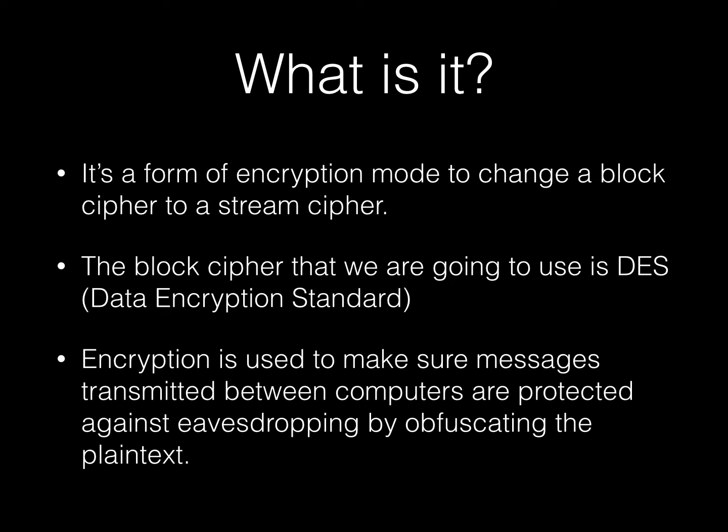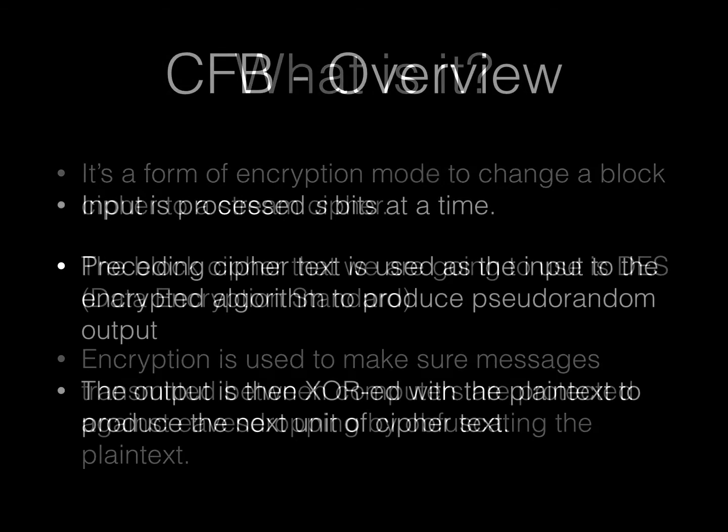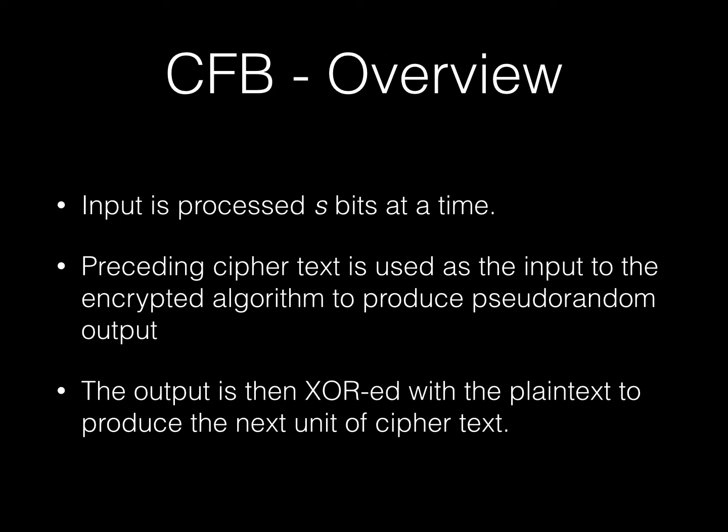The block cipher that we are going to use is DES. Encryption is used to ensure messages transmitted between computers are protected against eavesdropping by obfuscating the plaintext or the message. In CFB, input is processed as bits at a time. Preceding ciphertext is used as the input to the encrypted algorithm to produce pseudorandom output. This is a cycle until the whole plaintext has been converted to ciphertext. The output goes through an exclusive-or operation with the plaintext to produce the next unit of ciphertext. You will see this in the coming illustrations.